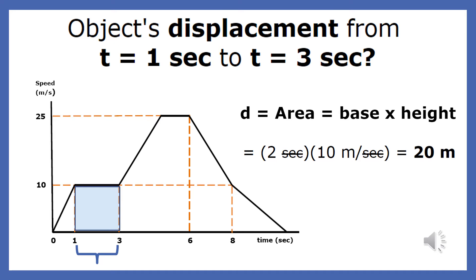To find the area of the shape, we multiply the base times the height, which is 2 seconds, times 10 meters per second, which turns out to be 20 meters.